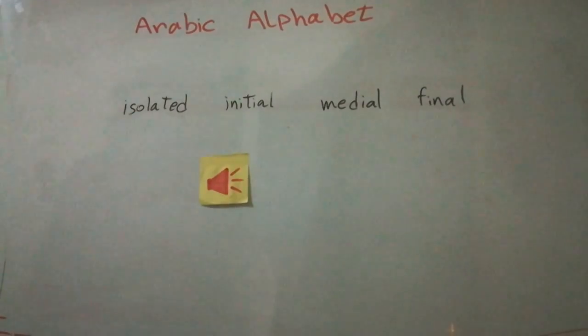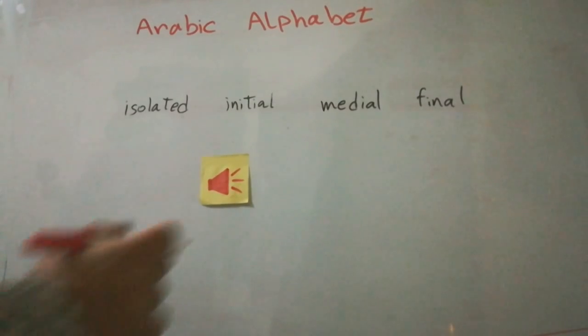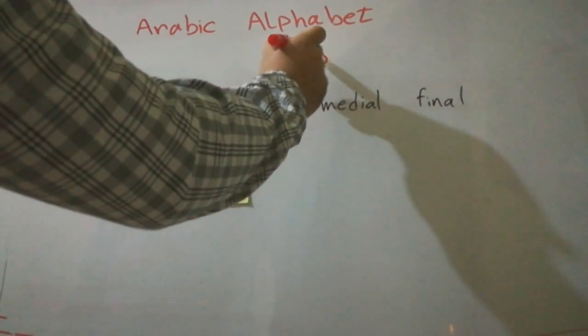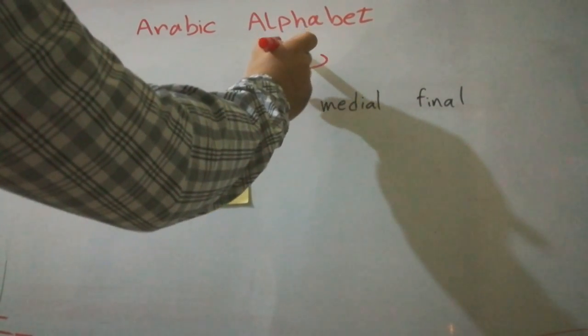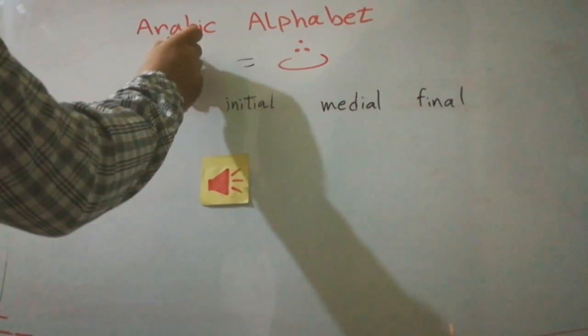Hello people! The fourth letter in the Arabic alphabet is the letter THA. Three dots. THA, which is exactly like that.